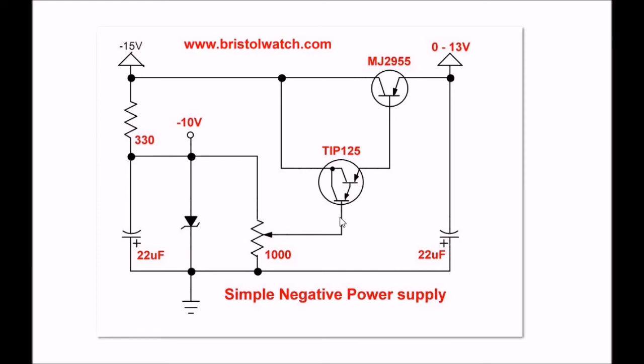What you will find, there's going to be a negative voltage drop across the two base emitter junctions within the Darlington, and then an additional base emitter voltage drop across the MJ2955, which is rated for up to 15 amps at 60 volts. The TIP125 will run 4 or 5 amps.